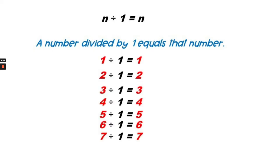So if there's only one crayon, we divide it by one time. 1 divided by 1 equals 1. If we have two crayons and we divide it into one group, 2 divided by 1 equals 2. If we have three crayons and we divide it into one group,